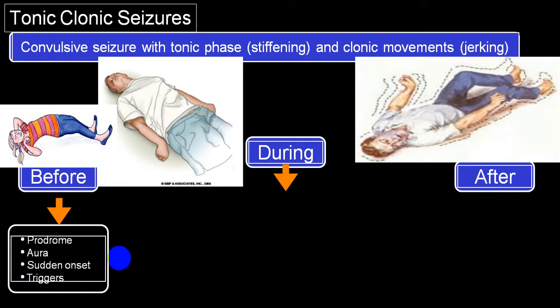The tonic and clonic seizure, GTC, can be triggered by some factors. Some of those factors include particularly bright light, flickering light, sounds, hunger, insomnia, certain foods, etc.